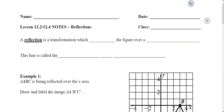Today we're going to move on to reflection. We saw translation before spring break, so now we're talking about reflection — just like when you look at yourself in the mirror. If you lift up your right hand, in the mirror it's actually the opposite. A reflection is a transformation which flips the figure over a line, called the line of reflection.